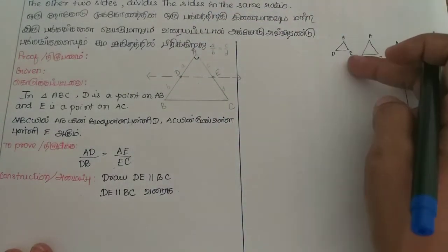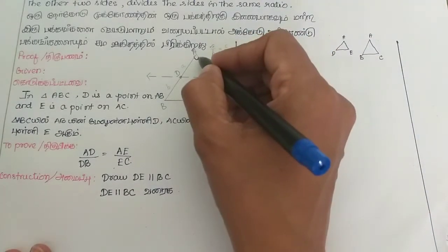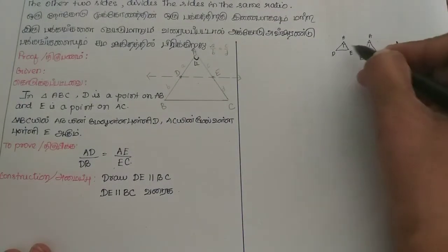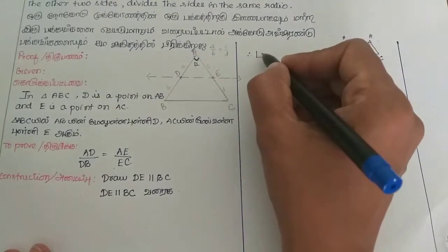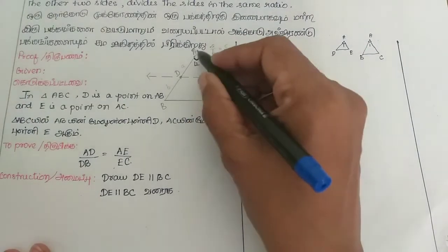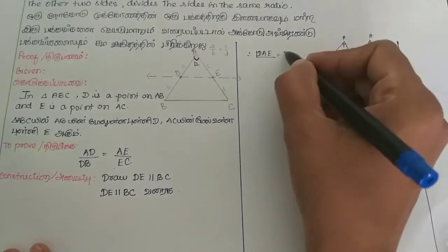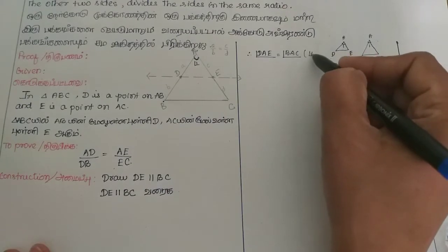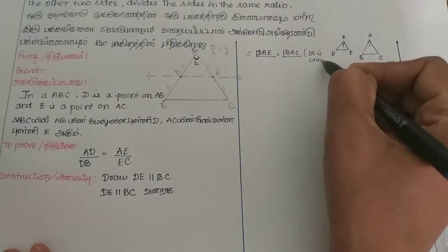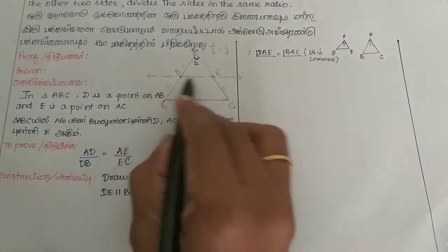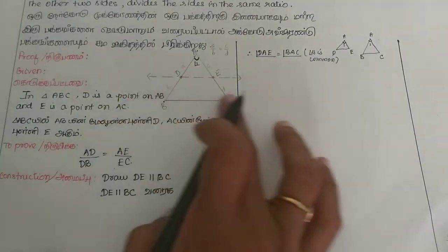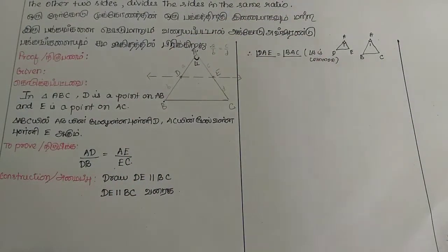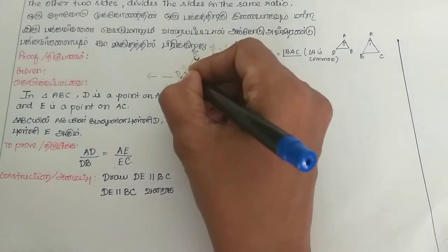Angle A is common to both triangles. Since DE is parallel to BC, with AB as the transversal, the corresponding angles are equal — angle ADE equals angle ABC.